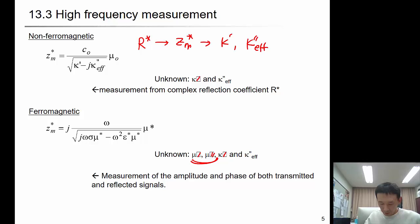In this case, you have to measure the reflected signal and also transmitted signal together so that you can have more information to estimate these four parameters.